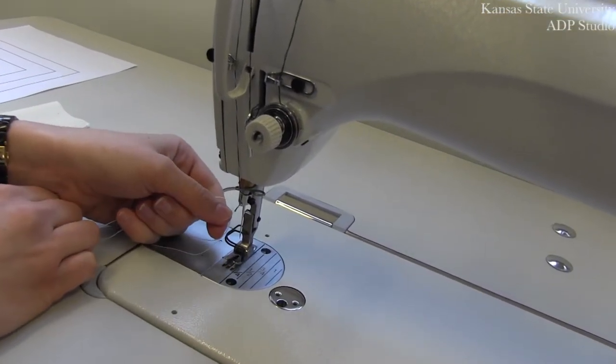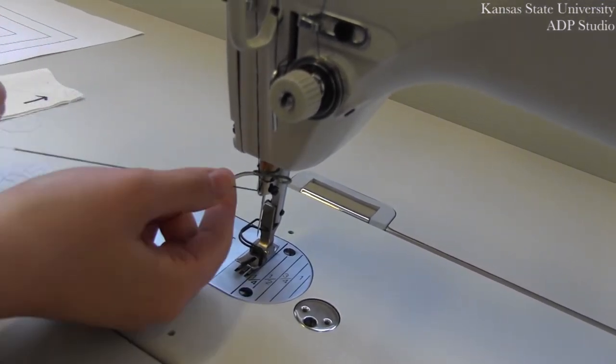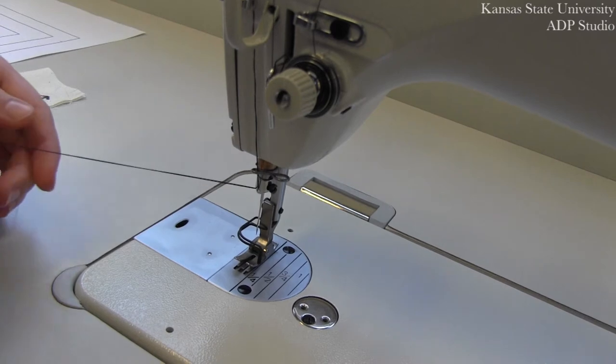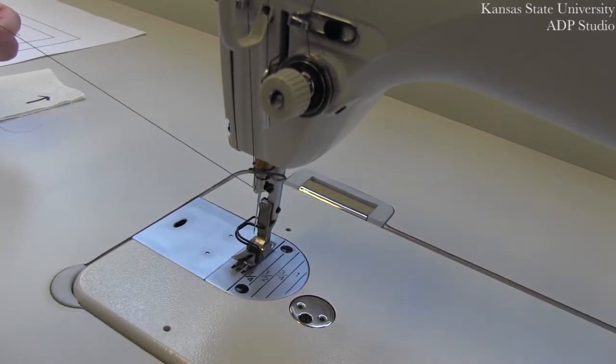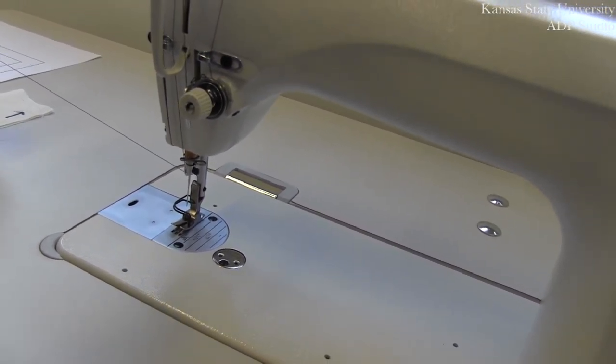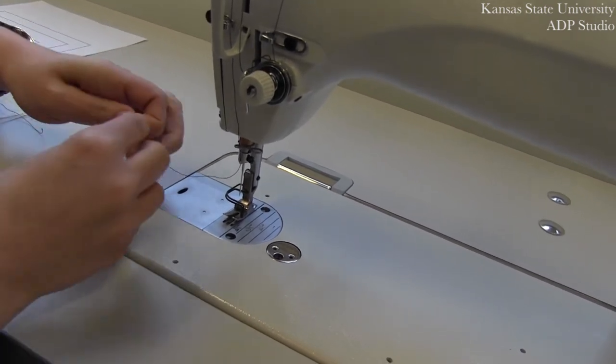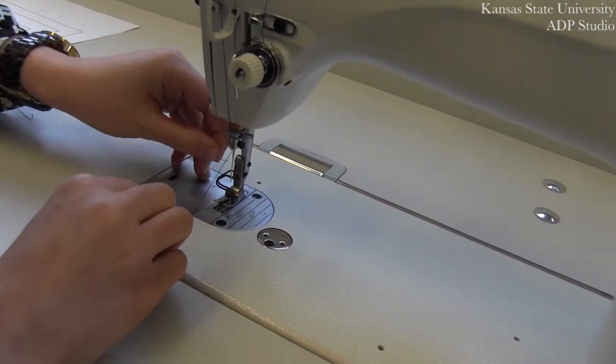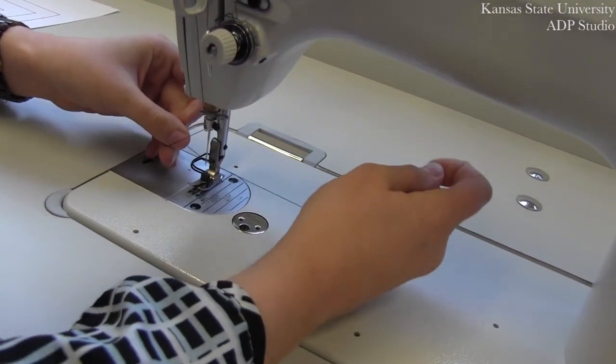Continue to pull your thread so that you no longer have your previous color visible. At this point, you can clip your thread and insert it through your needle from left to right.